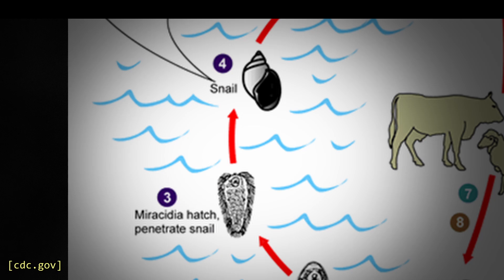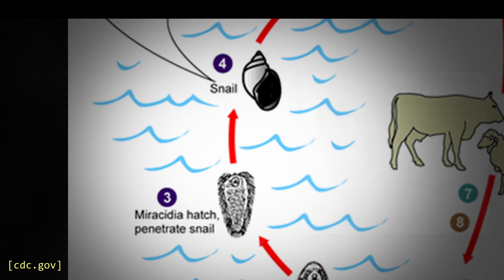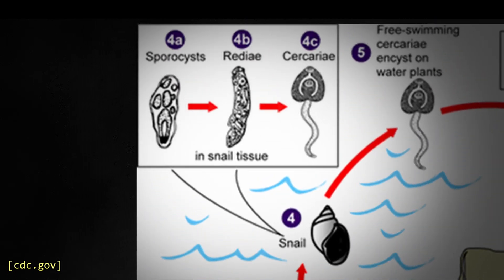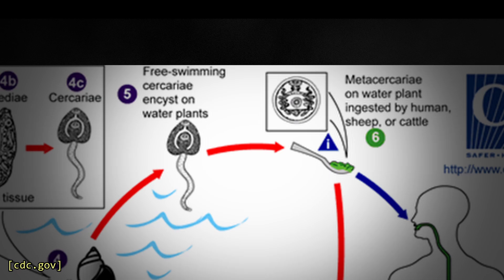Studies have highlighted the role of different snail species in facilitating transmission, with Galba truncatula being the primary host in many regions, while new species such as Fosaria have been identified in areas with changing environmental conditions. In the snail, the parasite undergoes several stages — the sporocyst, redia, and cercarial forms — before the mature cercaria is released. The cercaria swims in water seeking its second intermediate host, freshwater plants, where it encysts as metacercariae and completes the life cycle.